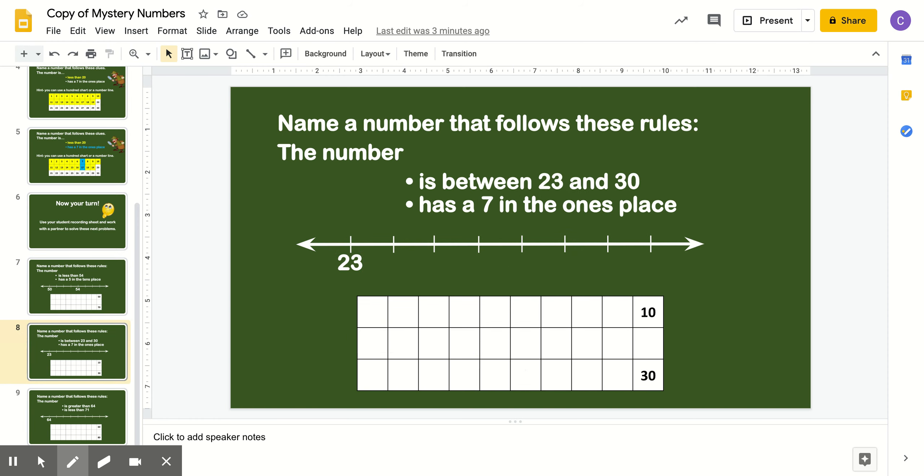It says, name a number that follows these rules. The number is between 23 and 30 and has a 7 in the ones place. So I'm going to fill in this number line. I'm going to do 23. What comes after 23? Right. 24, 25, 26, 27, 28, 29, and 30.